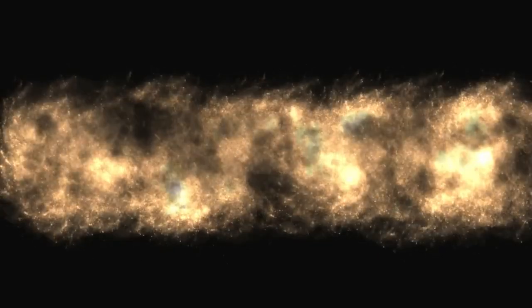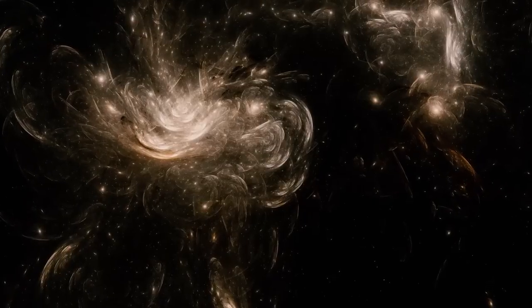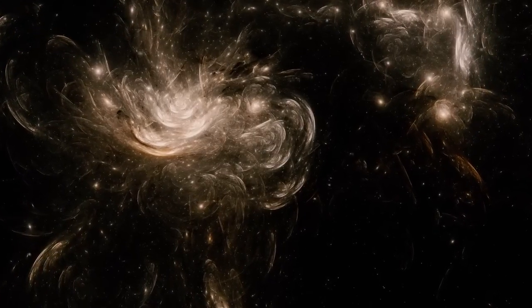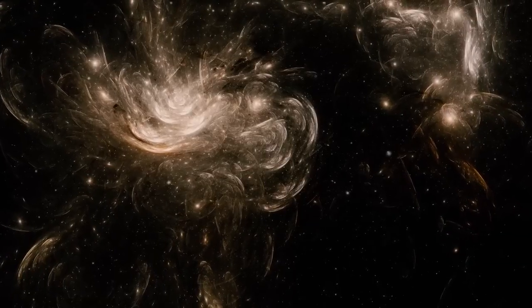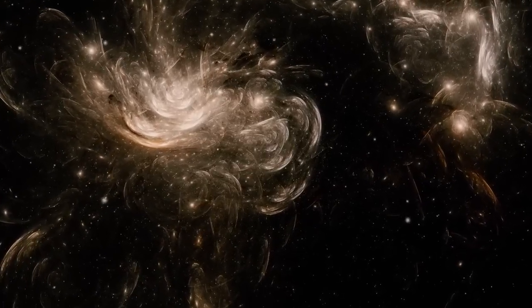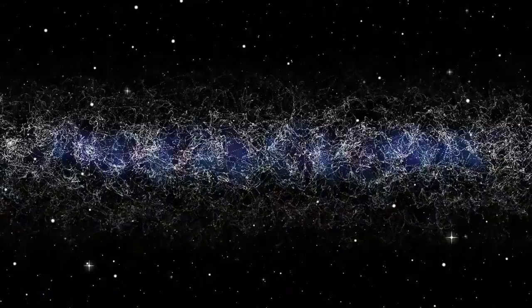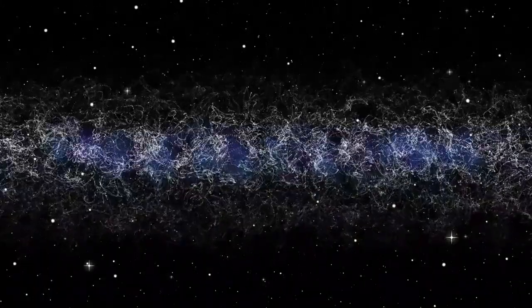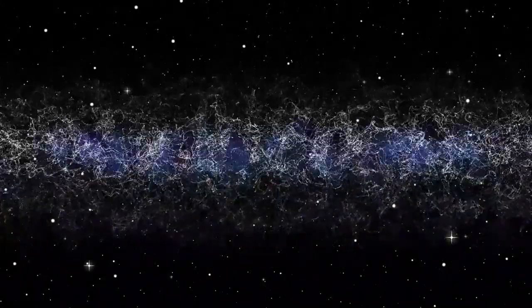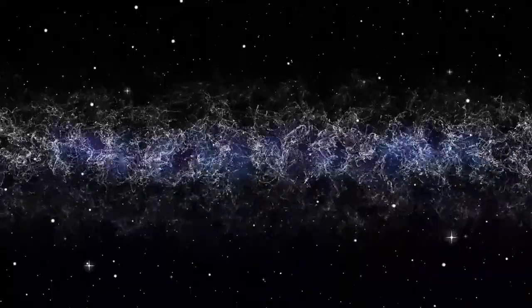To visualize this, imagine if our solar system were reduced to the size of a coin placed on a map of the United States. The entire Milky Way would then span the size of the actual continent. In that vast region, there would be around 300 billion star systems, and we are just one of them, adrift in a sea of unimaginable scale.